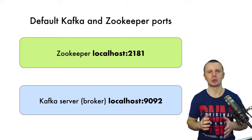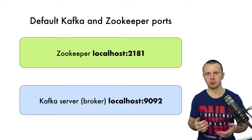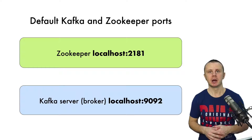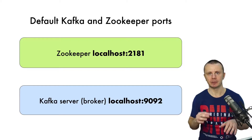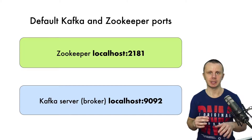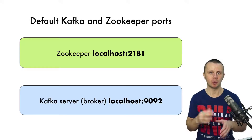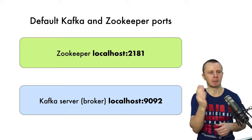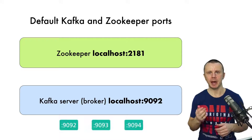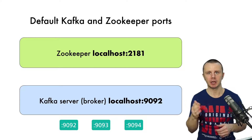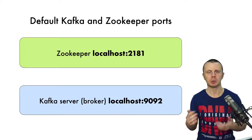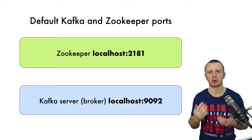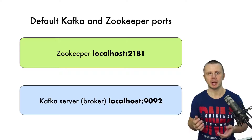The same applies to Kafka brokers. It is possible to run multiple brokers on the same computer, but you also need to create separate configuration files for every broker instance. You need to adjust at least the ports and make them, for example, 9092, 9093, 9094, and so on, depending on the quantity of brokers you are going to run on your computer.